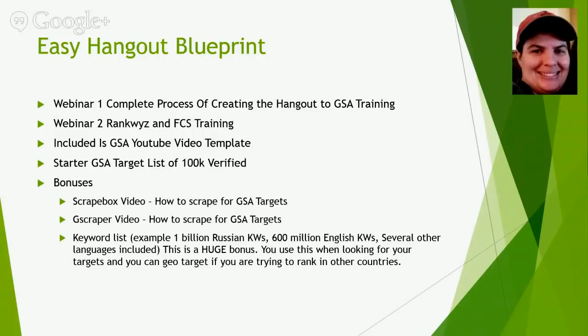RankWiz is one that you can buy accounts already pre-made, and FCS you have to make them yourself. And then we're going to include a basic GSA YouTube video template that you can literally take five clicks — you import it, swap out your URL, your anchor keywords, your article, and your emails, and you hit start. You don't really have to do anything else that's different because I'll set all the options up in the filters.